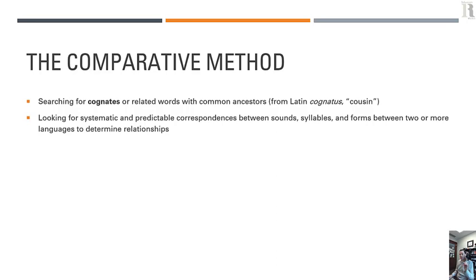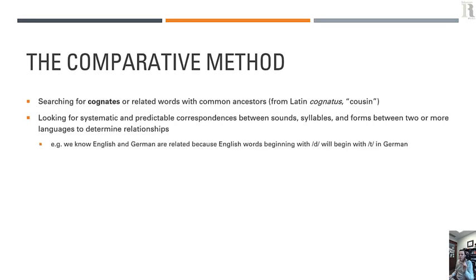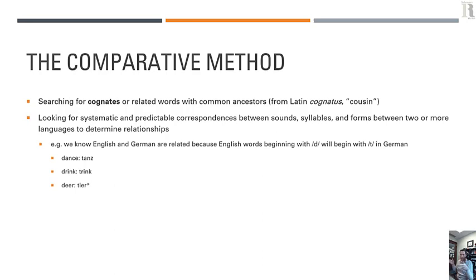We know English and German are related because English words beginning with D will begin with T in German in a systematic and predictable way. In English we have 'dance,' in German it's 'Tanz.' In English, 'drink'; in German, 'trinken.' In English, 'deer'; in German, 'Tier.' Now, 'Tier' in German means animal, not specifically the deer — but the word 'deor' in Old English did just mean animal, and the meaning has narrowed over time. So sometimes related words don't necessarily have the same meaning, but if they're close in meaning we can still reconstruct a relationship.